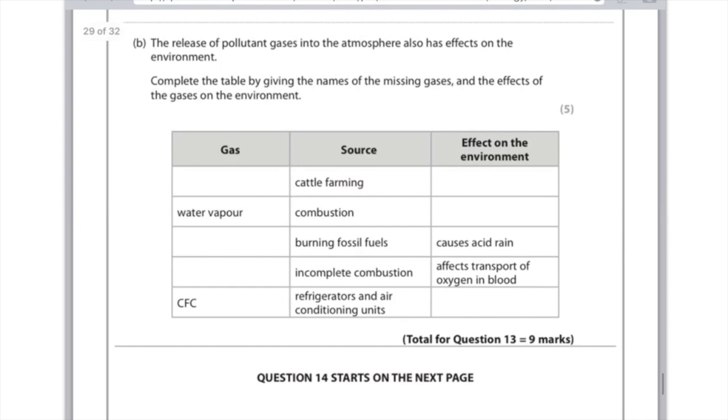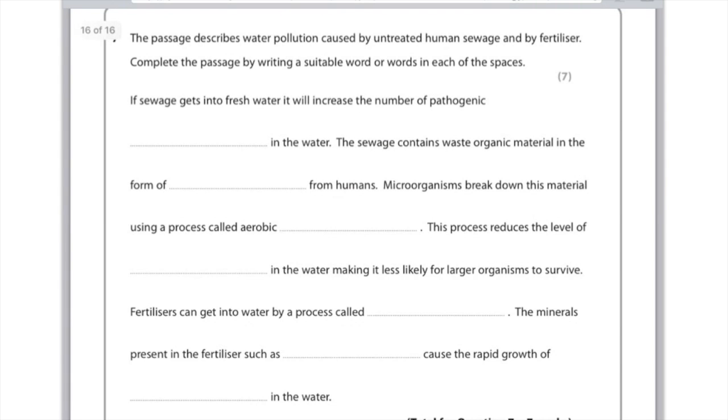Finally, CFCs are found in refrigerators, air conditioning units, and aerosols. What that does is it depletes or damages the ozone layer. The last question I'm taking is... actually, no, I might find another one. The passage describes water pollution caused by untreated human sewage and by fertilizer.